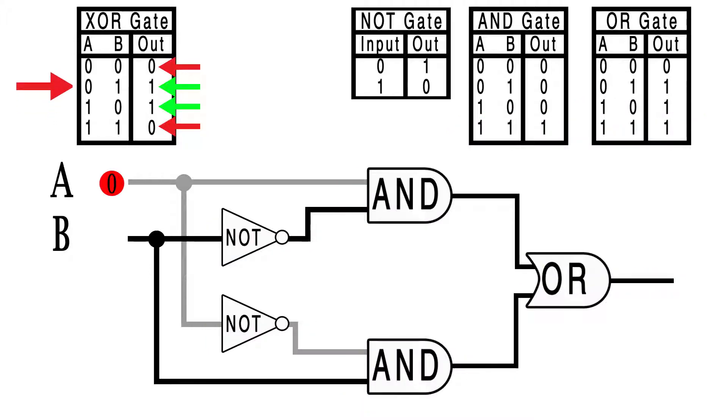If we input a 0 for A and a 1 for B, then we get the same result but flipped, where the bottom AND gate is satisfied rather than the top, we still end up with a 1 for our OR gate, and it's satisfied and outputs a 1, meaning the gate as a whole has output a 1.